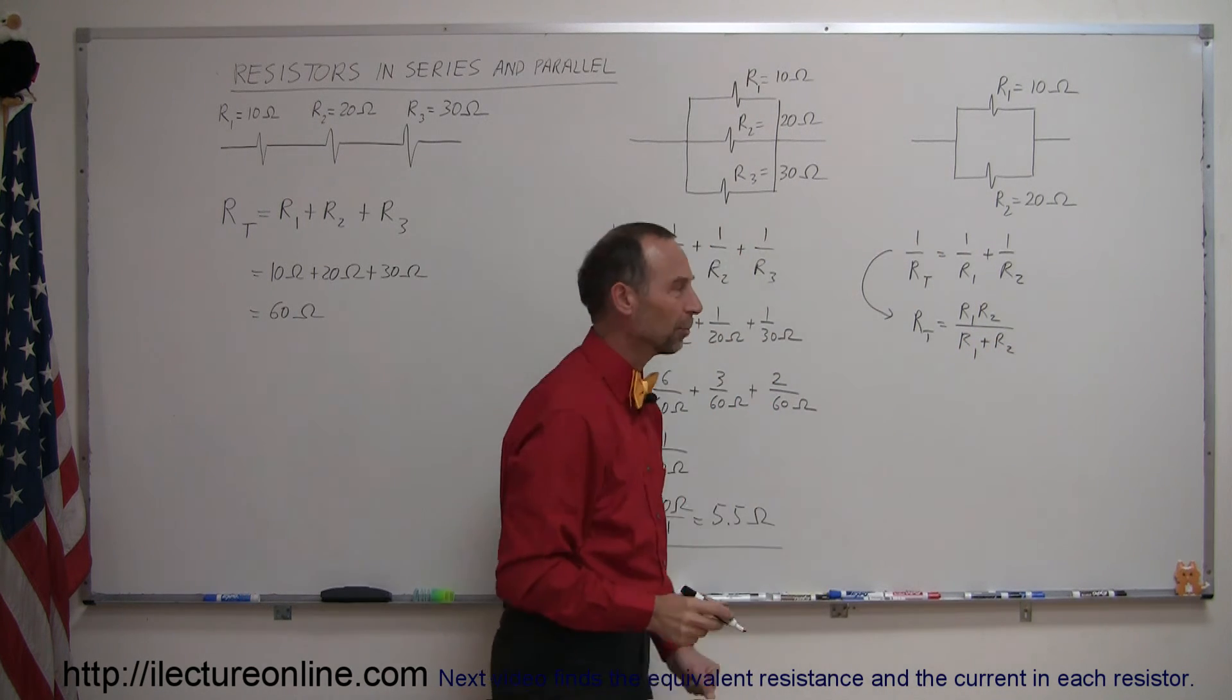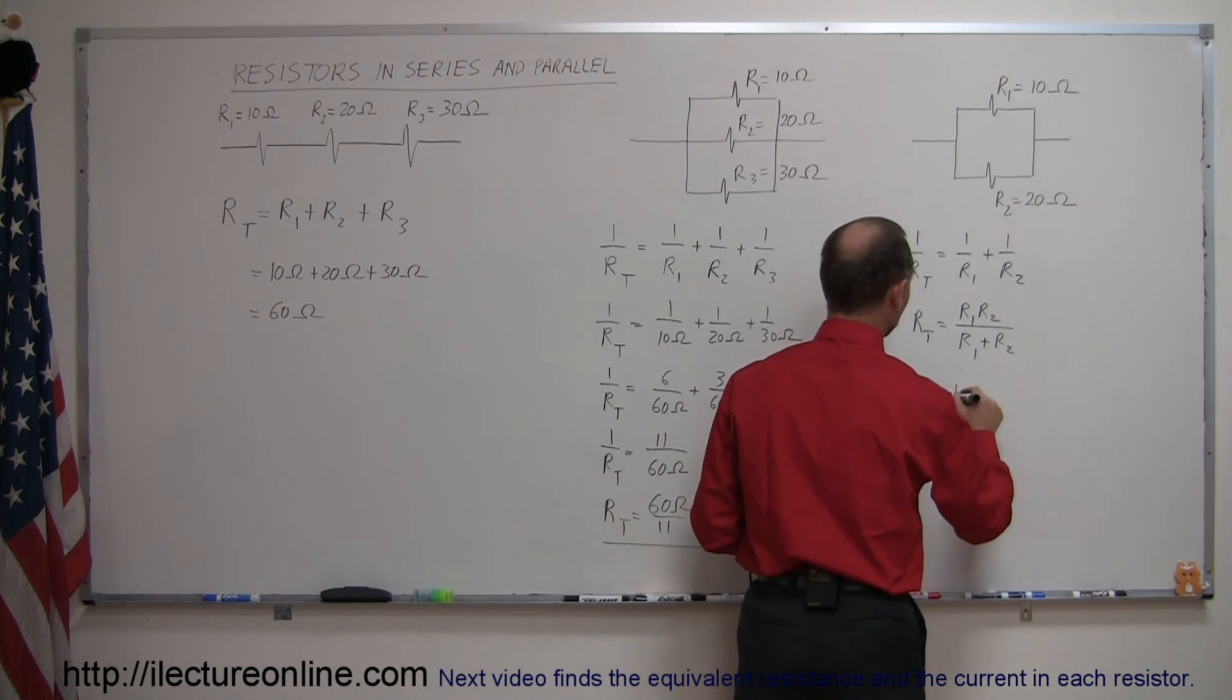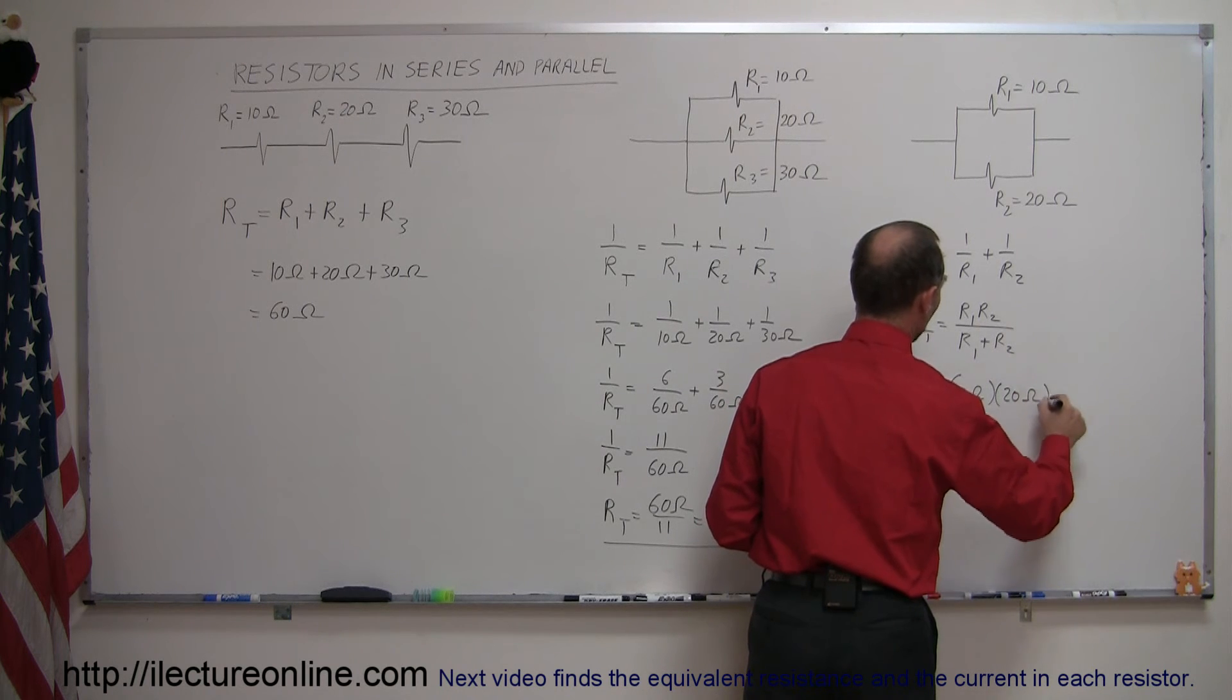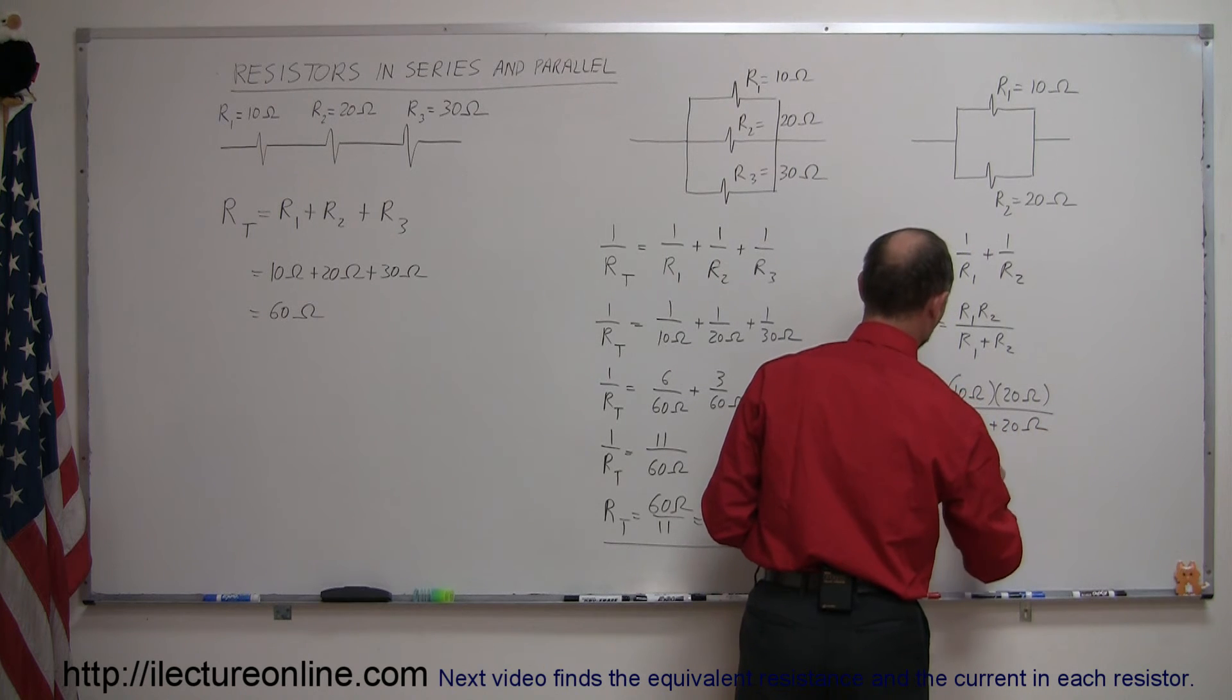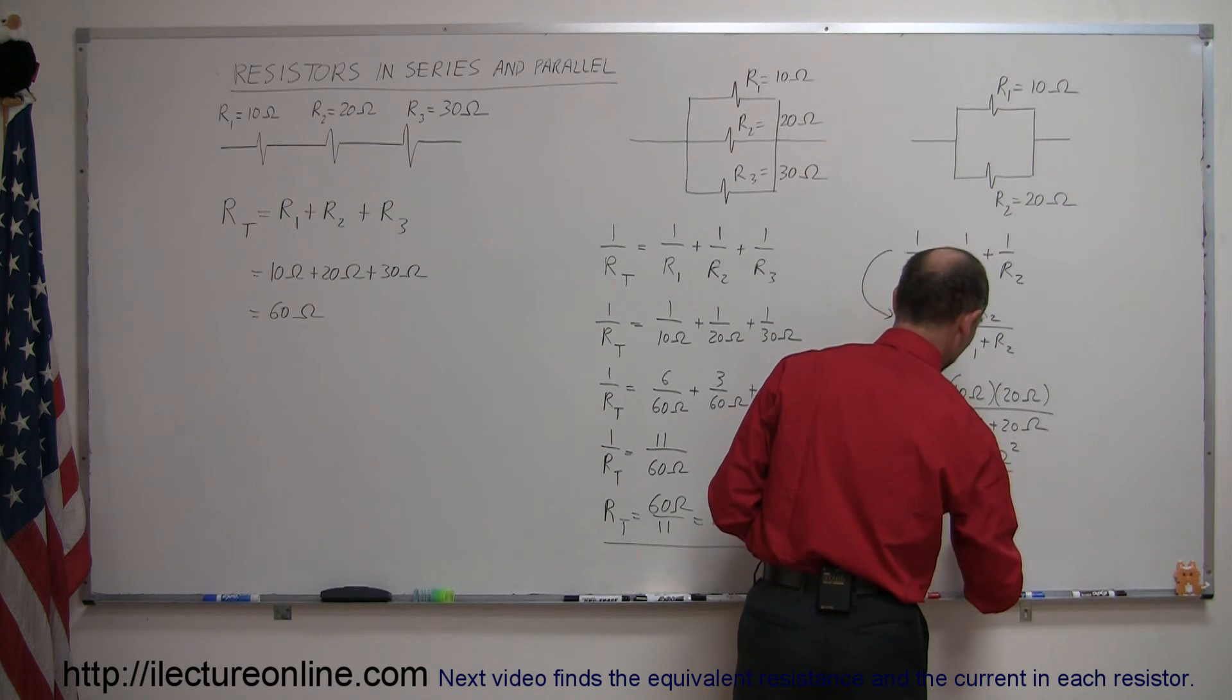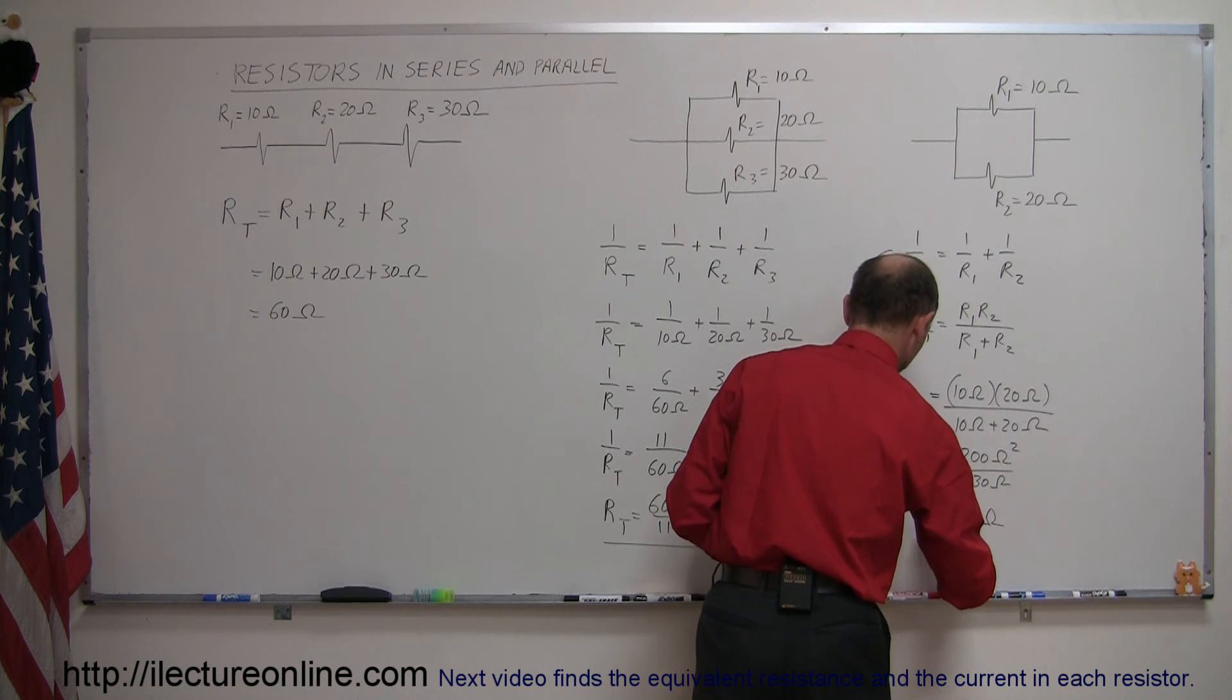And then if you plug in the resistances here, this is equal to 10 ohms times 20 ohms divided by 10 ohms plus 20 ohms. So this is equal to 200 ohms squared divided by 30 ohms, and that would be equal to, let's see, 6.7 ohms in R total.